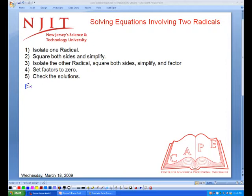So for example, if we have radical 2x minus 1 minus radical x minus 1 equals 1, our first step is to isolate one radical. We usually want to isolate the bigger, more difficult radical. So we isolate radical 2x minus 1. The second step is to square both sides.